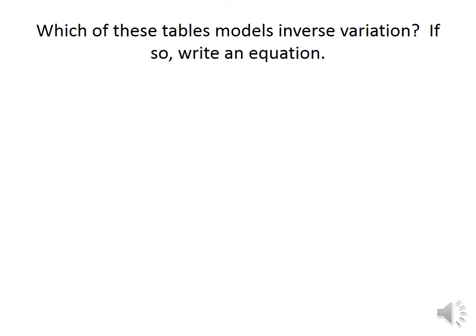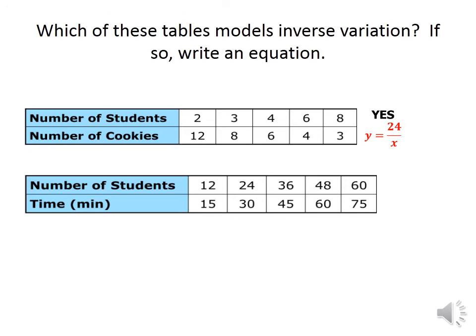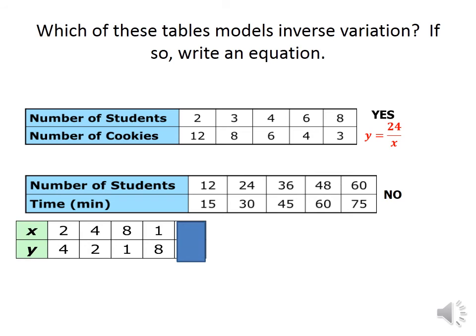Which of the following tables represents an inverse variation? In inverse variation, the product x times y is always constant. First table: 2 times 12 equals 24; 3 times 8 equals 24; 4 times 6 equals 24; 6 times 4 equals 24. The product is always 24, so this is an inverse variation: y equals 24 over x. Second table: 12 times 15 and 24 times 30 are not equal, so not an inverse variation. Third table: 2 times 4 equals 8; 4 times 2 equals 8; 8 times 1 equals 8. Product is always 8, so y equals 8 over x.